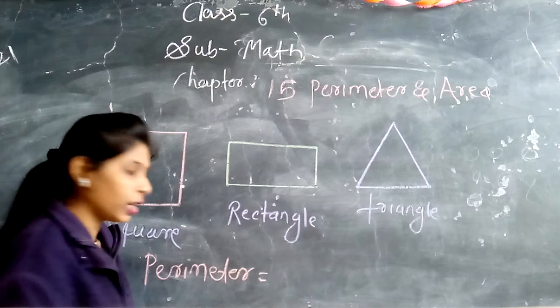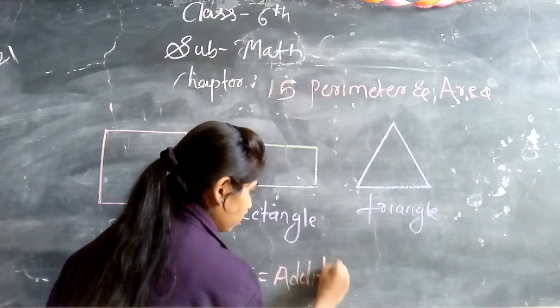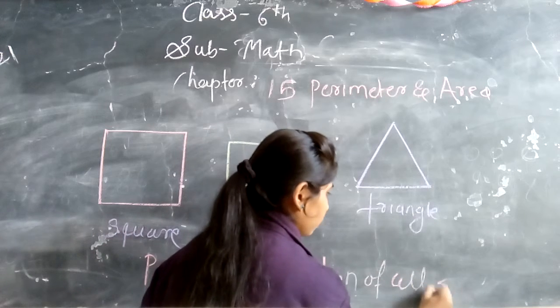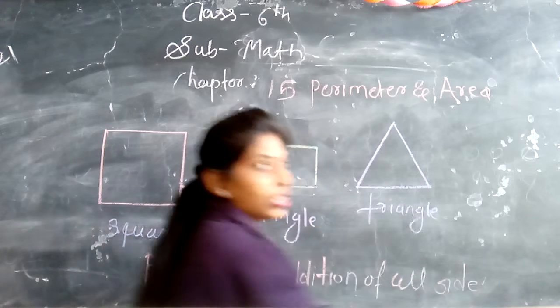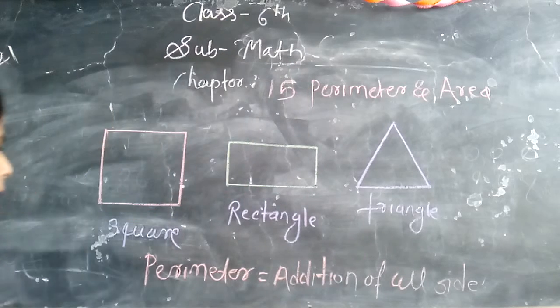Perimeter means the addition of all sides. Addition of all sides, that is called the perimeter.